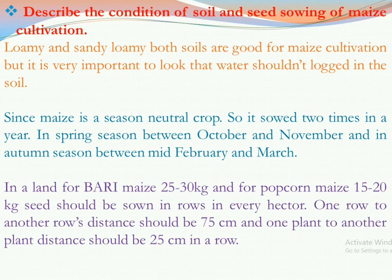For the seed ratio in maize cultivation, for Bari maize 25 to 30 kg, and for popcorn maize 15 to 20 kg of seed should be sown in rows per hectare. The distance from one row to another should be 75 cm, and the distance from one plant to another within a row should be 25 cm. That is about soil and seed sowing for maize cultivation.